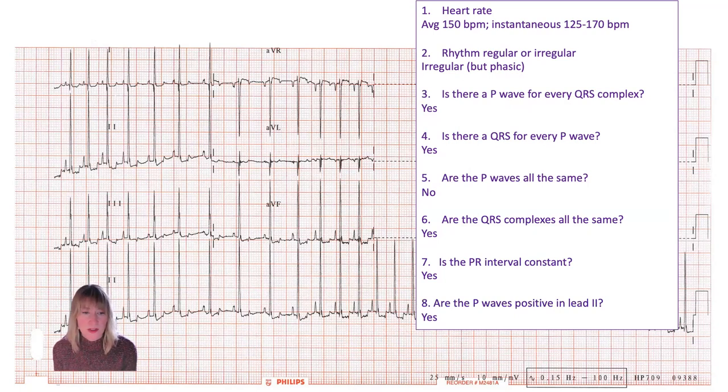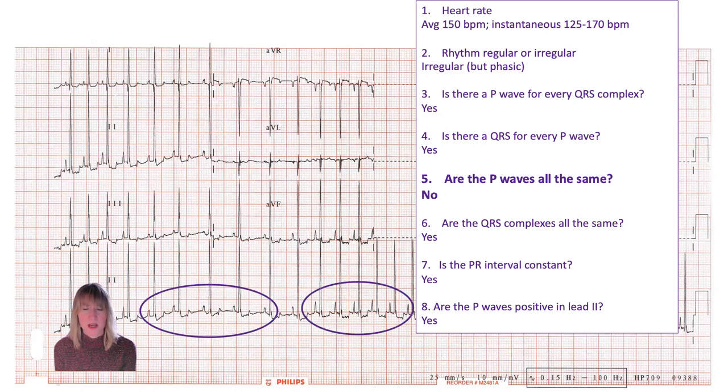Are the P's positive in lead two? They all are, even though the P waves are changing. I'm going to come back to this concept of the P waves not being all the same, because we've answered yes to everything else in terms of criteria that might fit a sinus rhythm, and so is all of this sinus rhythm, or is only part of it sinus rhythm?